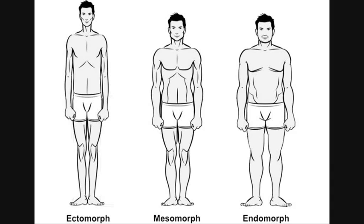The first body type we're going to talk about is the ectomorph. The ectomorph is a naturally skinny one. He usually doesn't have much muscle mass and has a really hard time gaining weight. He's one of those people that can eat as much as he wants but not gain any weight. Because of its light weight, the ectomorph is usually better suited to endurance sports like marathon running or long distance exercise.